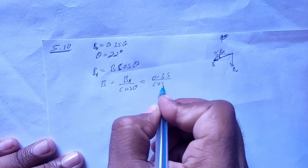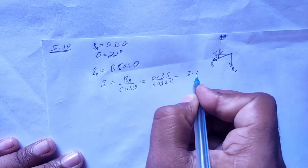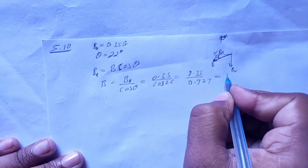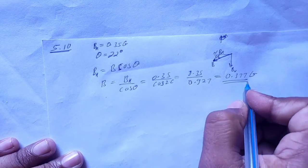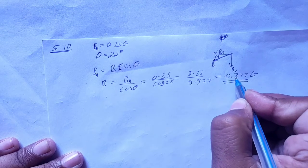Cosine of 22 degrees is 0.927, so B equals 0.35 divided by 0.927, which is equal to 0.377 gauss. The magnitude of the magnetic field at that place is 0.377 gauss.